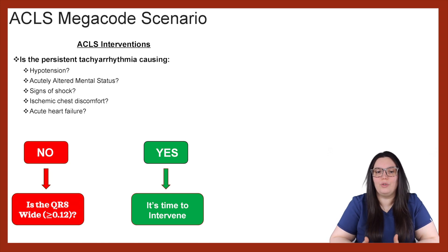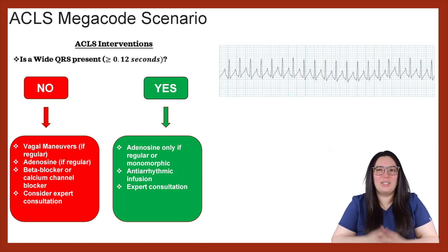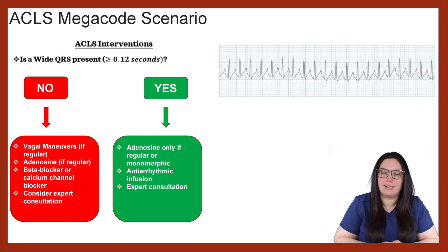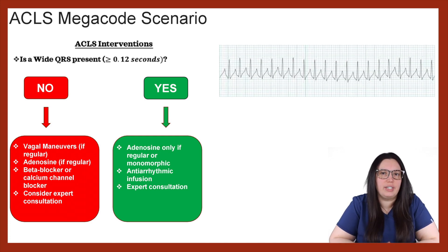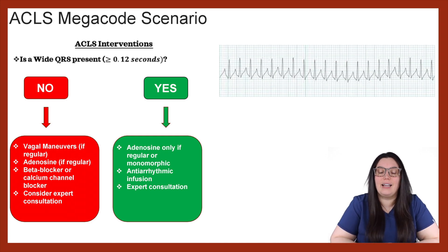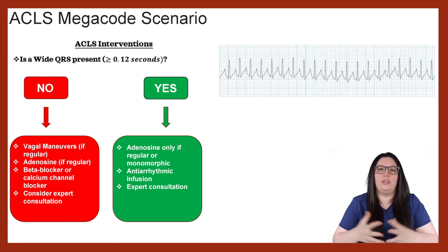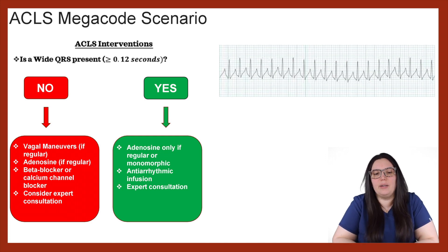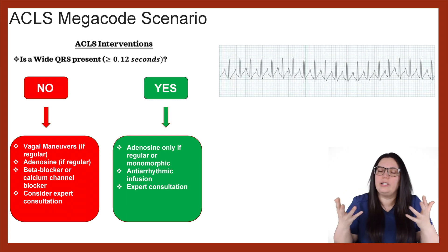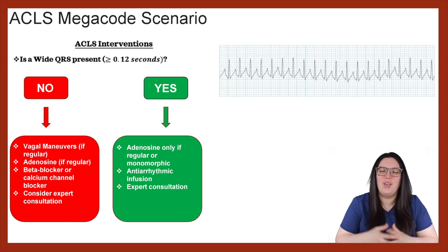The next intervention to consider is whether the QRS is wide — greater than or equal to 0.12 seconds. Going back to the rhythm, this narrow tachycardia does not have a wide QRS. Based on our algorithm, we're going to look at potentially vagal maneuvers if the rhythm is regular — and in this situation, it is regular, so that could be an option. Adenosine is also absolutely an option if the rhythm is regular — that stops the heart and it restarts, hopefully reprogramming itself back to the correct rhythm. We can also consider beta blockers or calcium channel blockers depending on heart rate and blood pressure, and we always want to consider expert consultation.